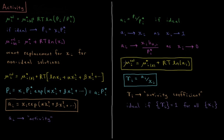The chemical potential of our component in solution is going to equal the chemical potential of the pure liquid of that substance plus RT times the natural log of the activity of that given species. There we have our equation, which is nice and simple for the chemical potential of an arbitrary species in a non-ideal solution.